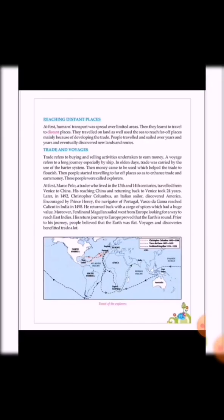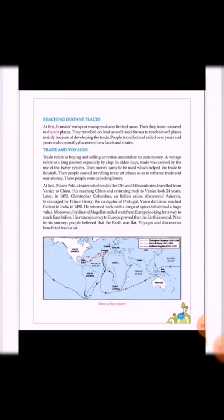The next page is 23. The headings are reaching distant places and trade and voyages. Let's read that also. Reaching distant places. At first, humans transport was spread over limited areas. Then, they learned to travel to distant places. They traveled on land as well used the sea to reach far off places mainly because of developing the trade. People traveled and sailed over years and years and eventually discovered new lands and routes.